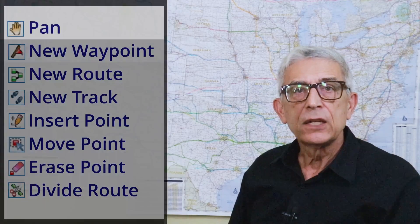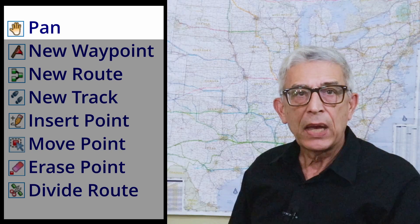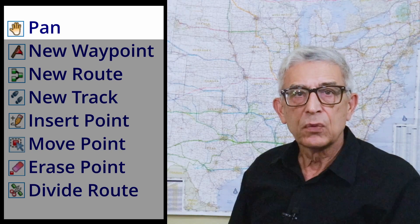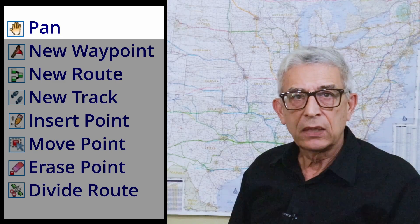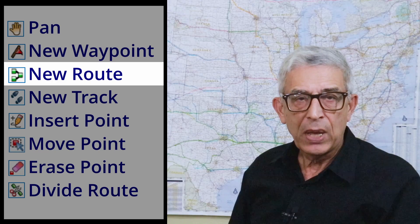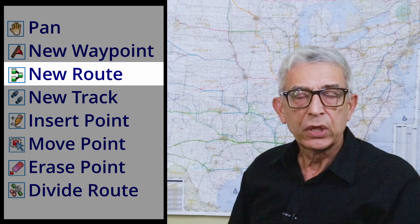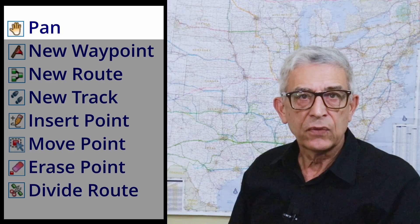So why is Basecamp so difficult for beginners to use? I believe the answer lies in Basecamp's modal design. What do I mean by modal design? The program's architecture consists of a series of modules, with each module performing one function. When one module is active the other modules cannot be activated. These are the major modes in Basecamp. Pan mode is the default mode and the other modes are not active. When you activate a mode such as new route mode, pan mode is no longer active. All you can do is work on routes until you reactivate pan mode.